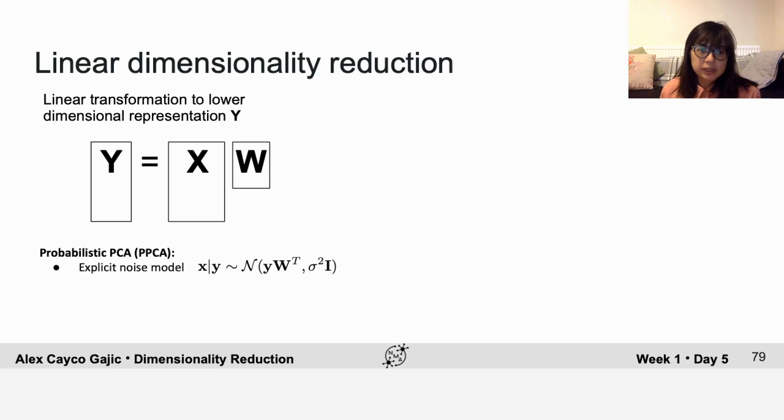One example is probabilistic PCA, which is similar to PCA, but it includes an explicit noise model. It assumes that the noise is Gaussian with the same variance in each direction.